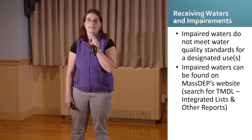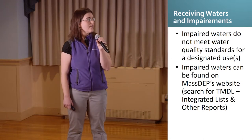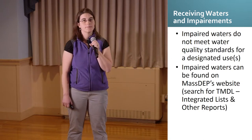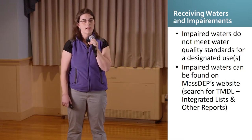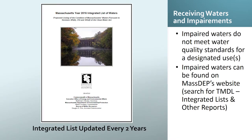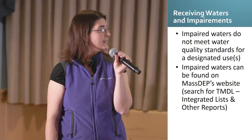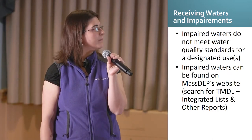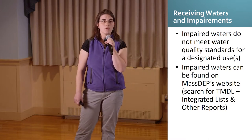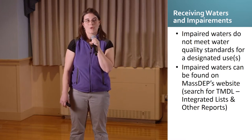As part of your IDDE program, you should have an understanding of your receiving waters and their impairments. Impaired waters do not meet the designated use for that water body. MassDEP develops a list of these impaired waters every two years in the integrated list of water bodies — the most recent was drafted in 2016. Knowing if your receiving water is impaired is important because it results in additional requirements.